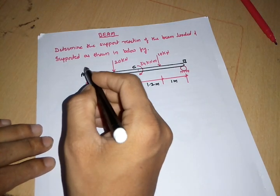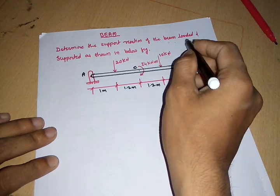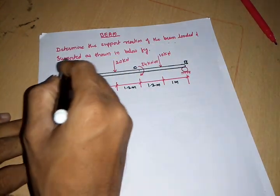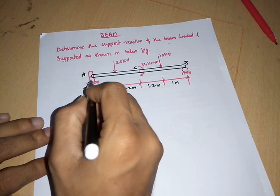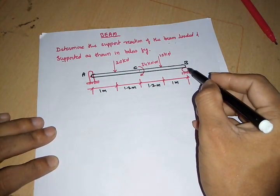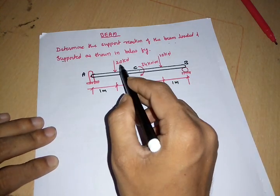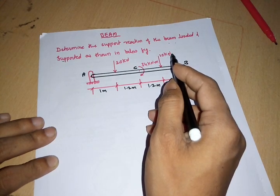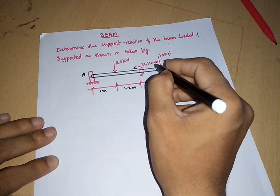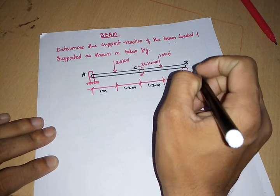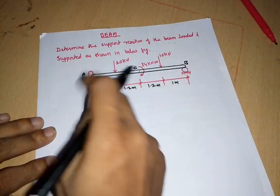This is the next problem on beam: determine the support reactions of the beam loaded and supported as shown in the figure. There is a hinge support at point A and a roller support at point B. It has been loaded with two vertical loads — 20 kilonewton and 10 kilonewton — and one external moment of 34 kilonewton-meter. For this type of loading, we have to find the support reactions.